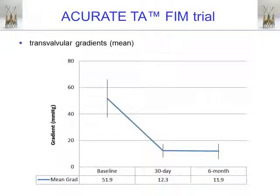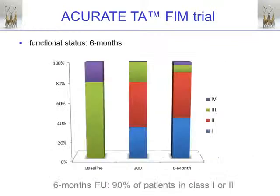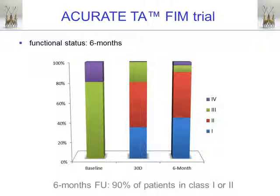Looking at transvalvular pressure gradients over time, mean gradients showed a significant improvement down to a mean of 12mmHg, and this gradient remained stable throughout follow-up. Regarding functional status — which may be even more important than pure survival — at baseline all patients were in NYHA class 3 or 4, but significantly improved, and at six-month follow-up, 90% of patients were in NYHA class 1 or 2.